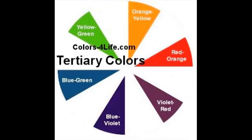The tertiary colors are also a combination of mixing two other colors. When you mix one primary and one secondary color, you will get a tertiary color, and this will give us six new color combinations. For instance, yellow and orange equal yellow-orange, yellow and green equal yellow-green, and you will continue in that manner to also create blue-green, blue-violet, and red-violet. And this completes the tertiary color combination palette.